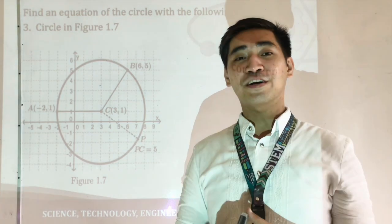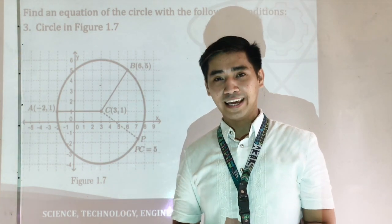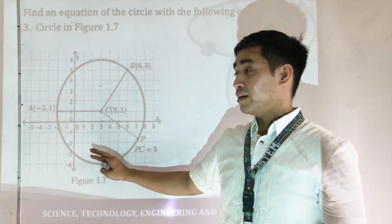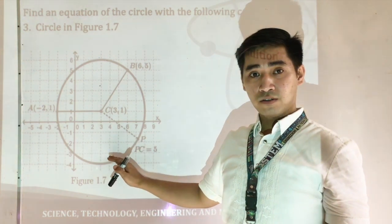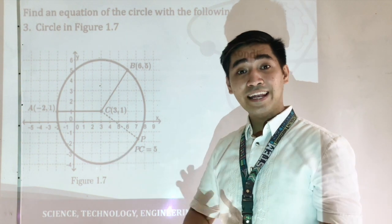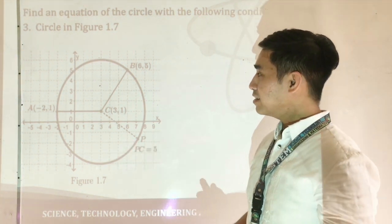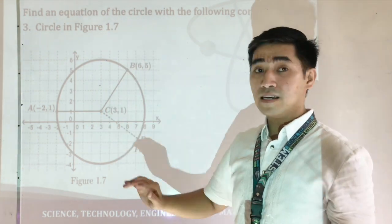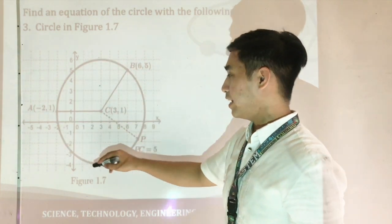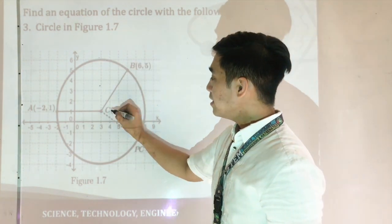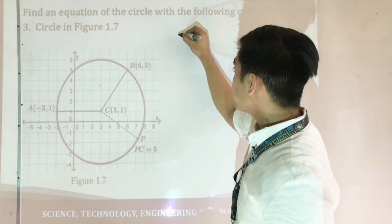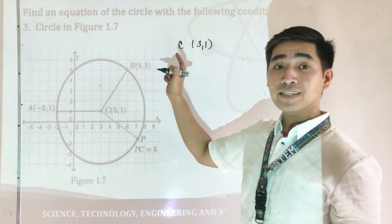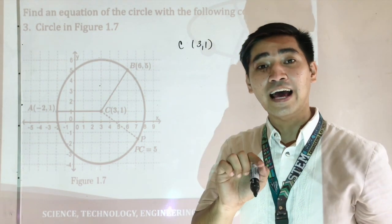For our third example, we are given the graph of the circle and we're asked to get the standard equation using this graph. Let us first analyze the graph. We are given points A, B, and C, and we could see a circle. Therefore, C is equal to its center, and the center is given as 3 and 1. Therefore, the center is not anymore located at the origin.